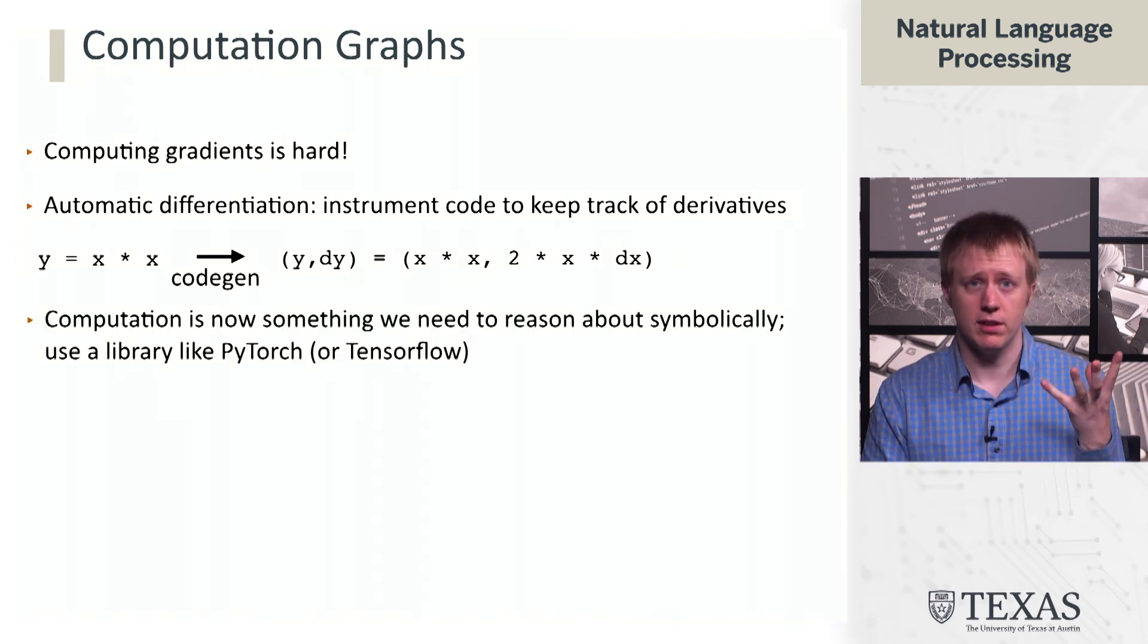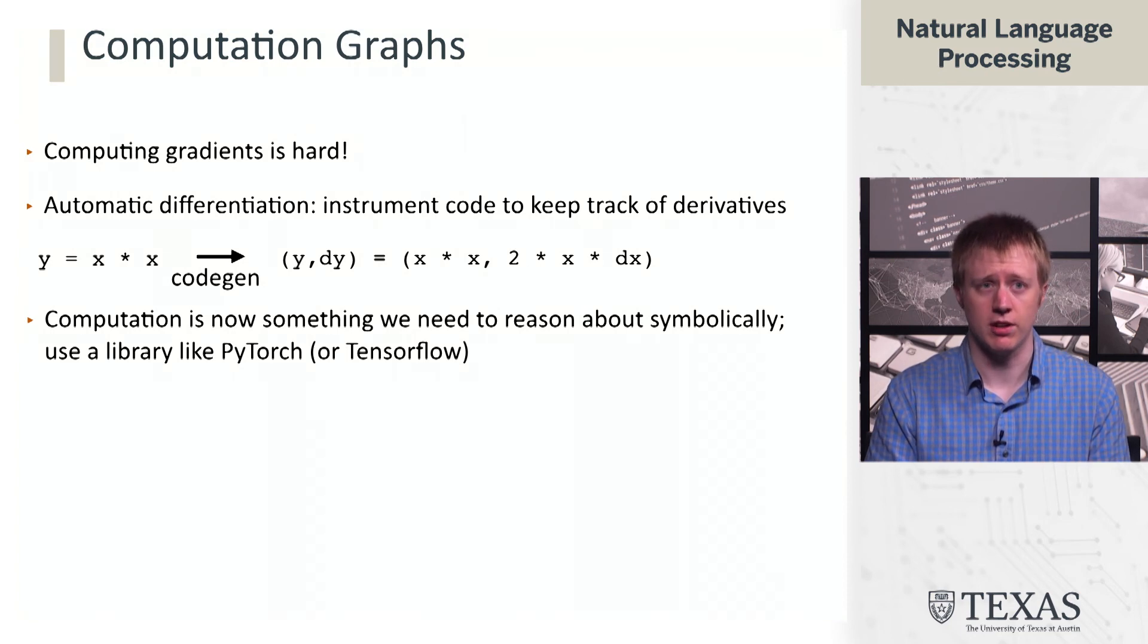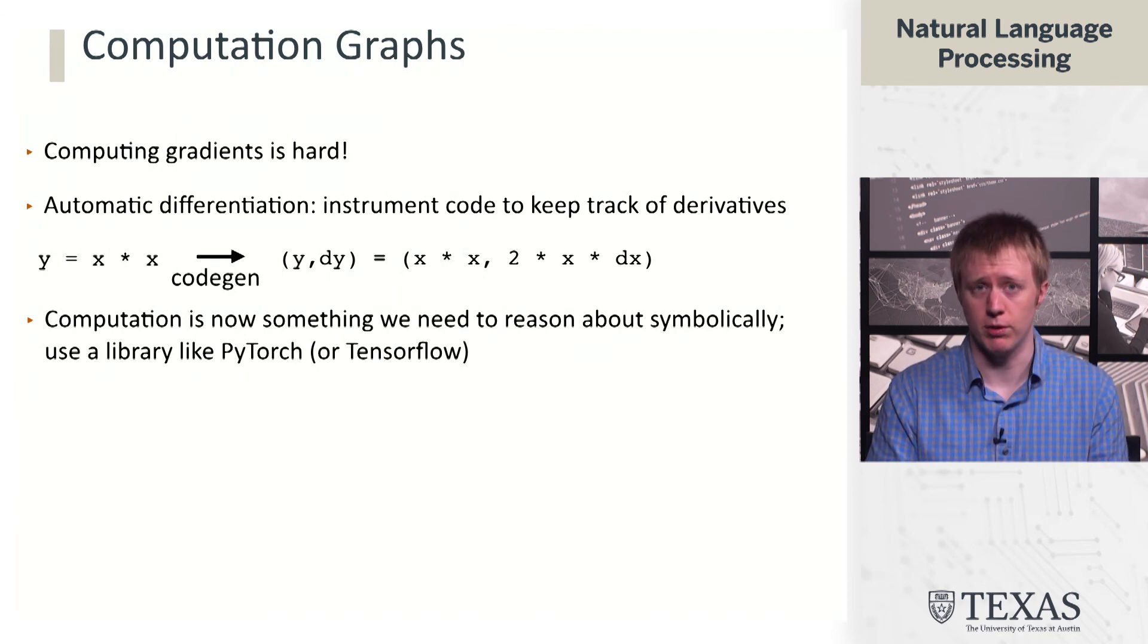The computation is now something that we handle symbolically, and we have to change the way we write code a little bit in that we couldn't necessarily just use constants or do all the operations we want before. But assuming we're willing to play within those very mild restrictions, we can use libraries like PyTorch or TensorFlow to express our computation. Now we don't need to compute derivatives ourselves; we can get these frameworks to do it for us.